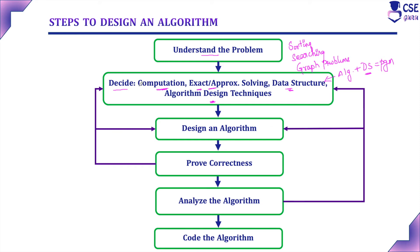So the second step is to decide the computational device, exact or approximate problem solving, data structure, and algorithmic design techniques. The third step is to design an algorithm. Now with complete knowledge of the type of problem, inputs and outputs, data structure, and algorithmic design techniques, the next step is to design an algorithm — that is, the step-by-step instructions to solve the given problem.